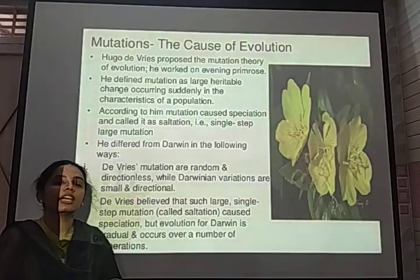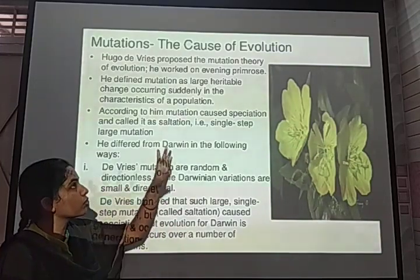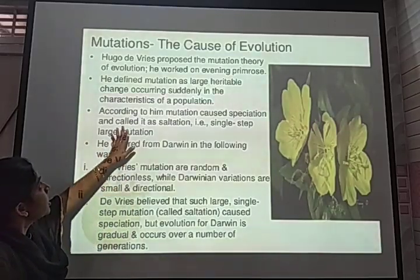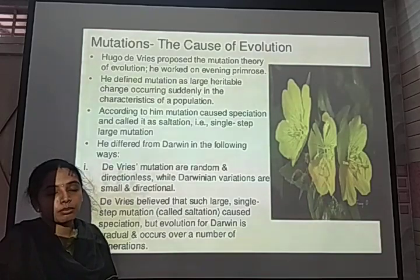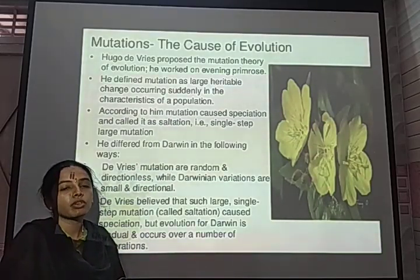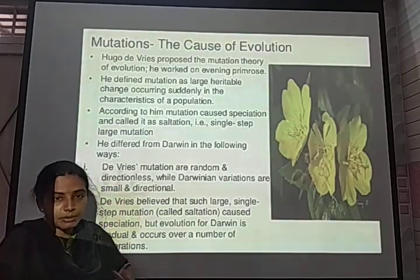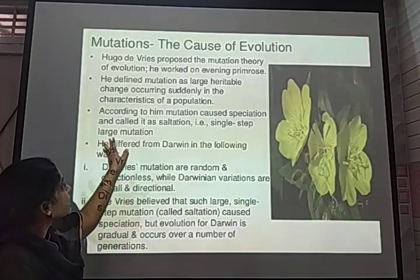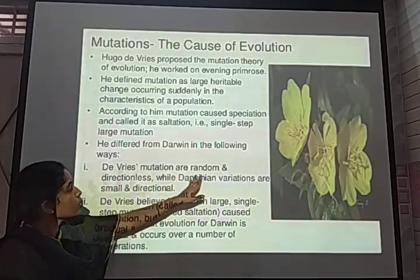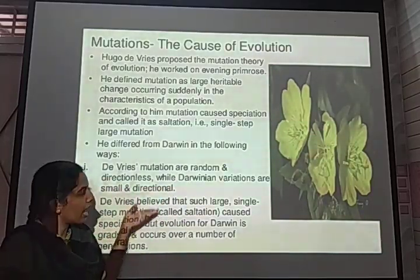Mutation is a heritable change that occurs in a gene sequence and is the basic raw material for evolution. If there is no mutation, evolutionary aspects do not occur. The mutation concept was explained by scientist Hugo de Vries, using the example of the evening primrose, Oenothera lamarckiana. Mutation occurs in a single step, called saltation, leading to large mutations. De Vries explains that the evolutionary process occurs at random and is directionless, whereas Darwin described variations as small and directional.